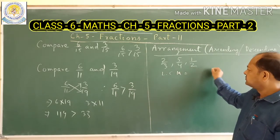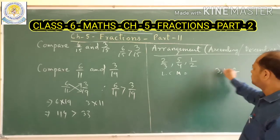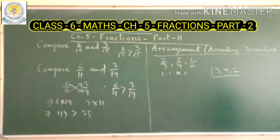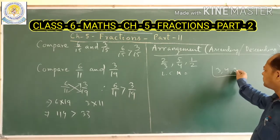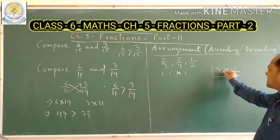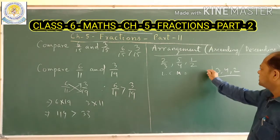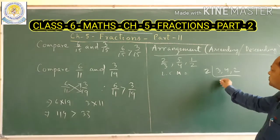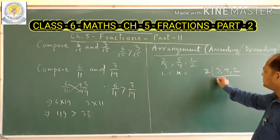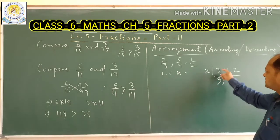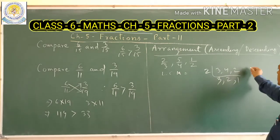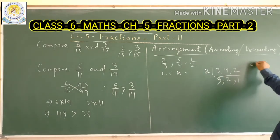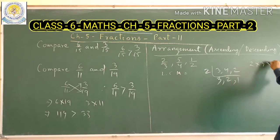So LCM of 3, 4, 2. First we have to find it out. Because 3 is a prime number and 2 is a prime number. Dividing by 2: we get 1, and 3 remains as it is a prime number. 2 twos are 4, and 2 ones are 2. So LCM equals 2 into 3 into 2, that is 6 into 2, which is 12.